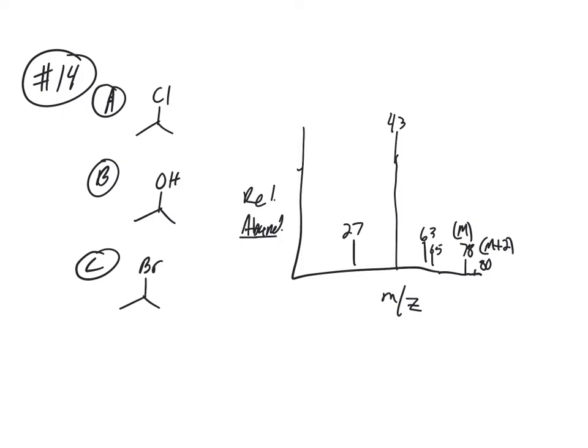Chlorine has an isotope, so chlorine exists as 35 and 37 in a three-to-one ratio. Chlorine 35 is 75% of all the chlorine on Earth, and chlorine 37 is 25%. Bromine also exists as 79 or 81.